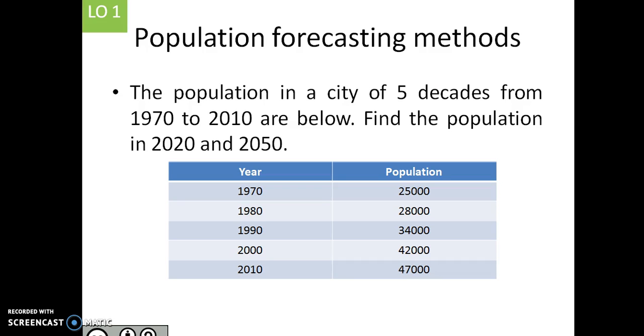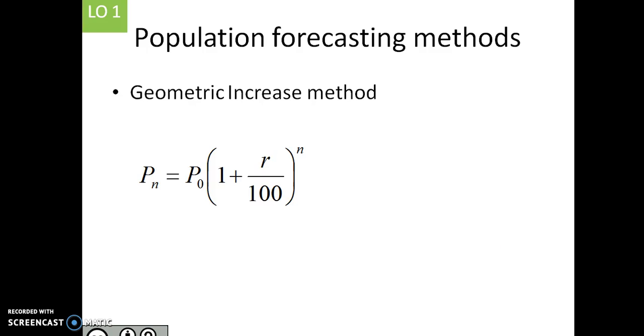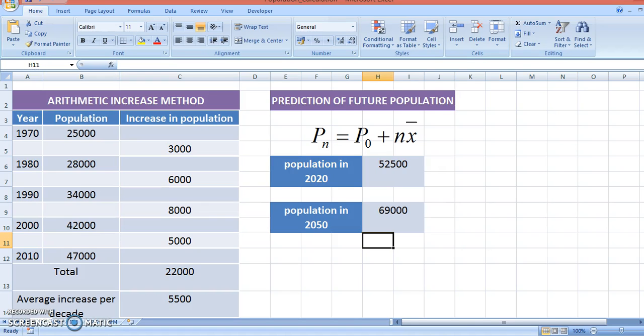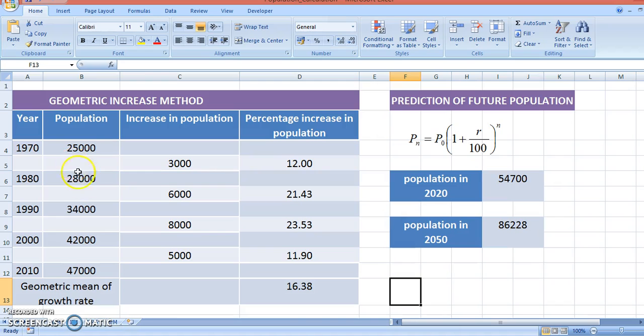Let us see some other methods for population forecasting. The second common method is geometric increase method. It assumes a geometric series and a constant rate of increase in population over a given number of years. Let us see how the same problem can be done in the geometric series. We have the same data and calculate what is the increase in population for decades.